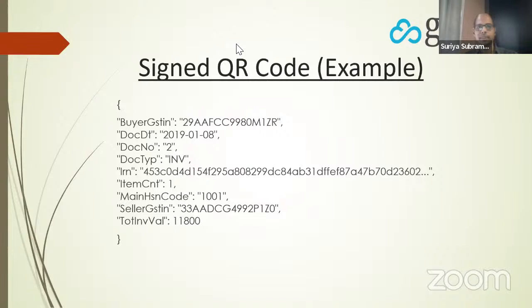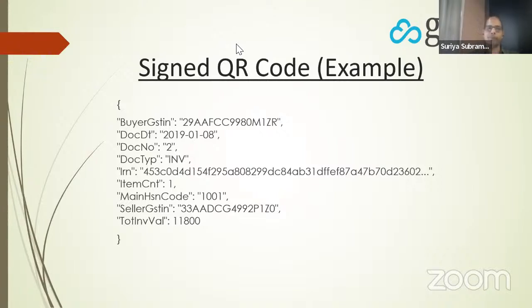Let me go over some of the questions on the chat. CA Satish asked: is there any time limit to generate an IRN? Right now the portal allows you to generate an IRN any time after the date of invoice. Today is the 15th of March — any invoice dated 15th of March or prior can be generated in the portal. You will not be able to generate invoices for future dates.